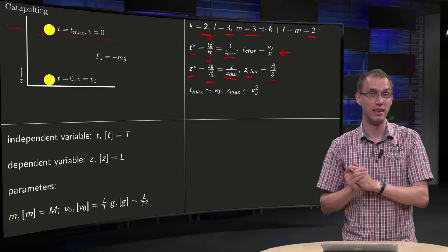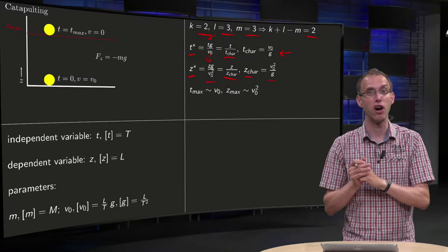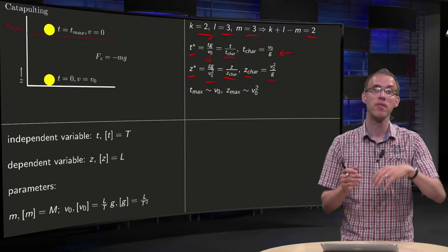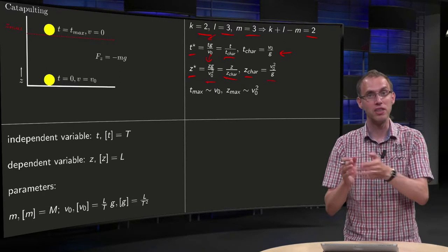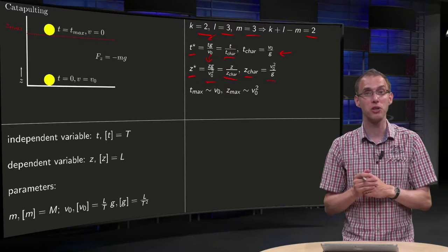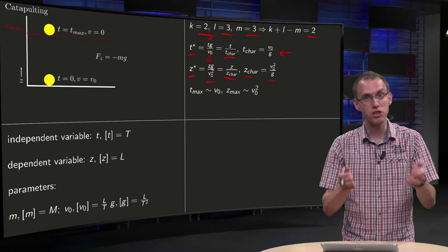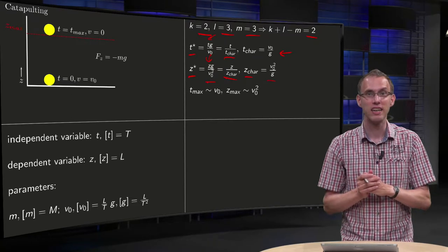So this m times v0 squared, apart from the factor half, is the initial kinetic energy, and m times g times z* gives you your potential energy. So this z* is sort of measuring the potential energy with respect to the kinetic energy.